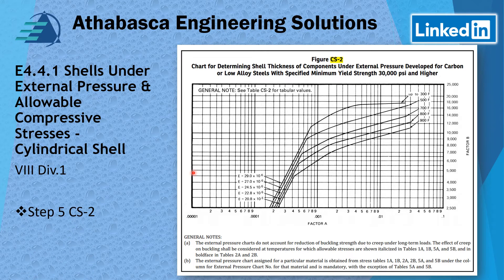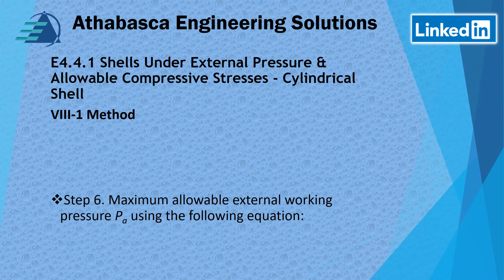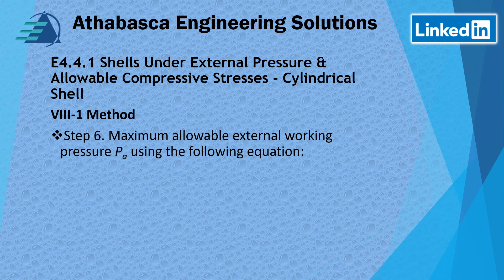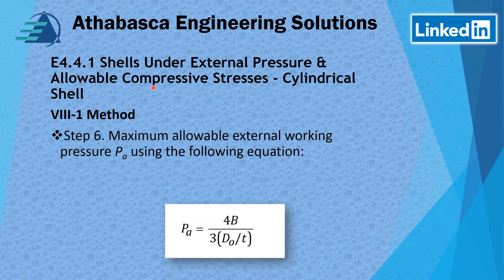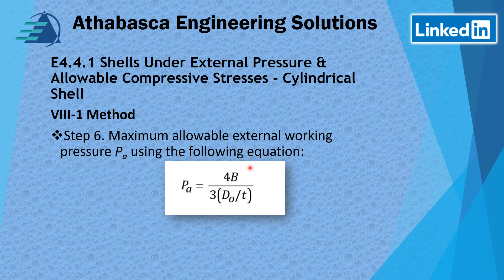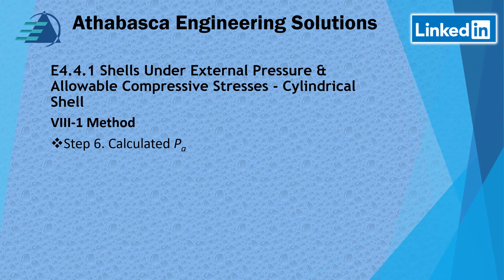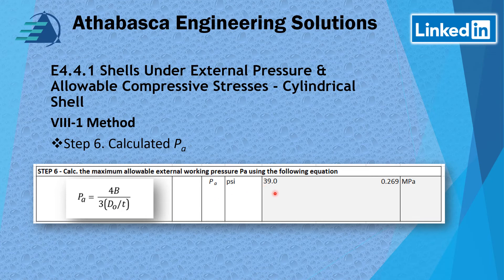Step 6: maximum allowable external pressure PA is calculated using Factor B along with DO and T from previous steps. In our particular example, PA equals 39 PSI as the maximum allowable external pressure.